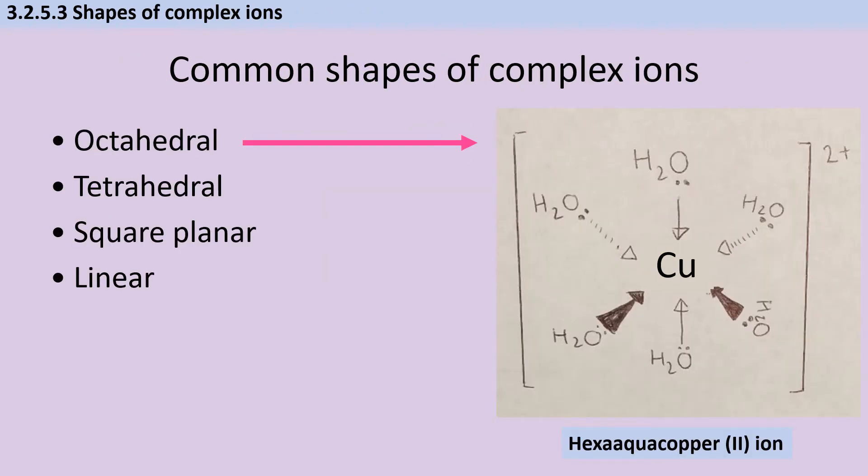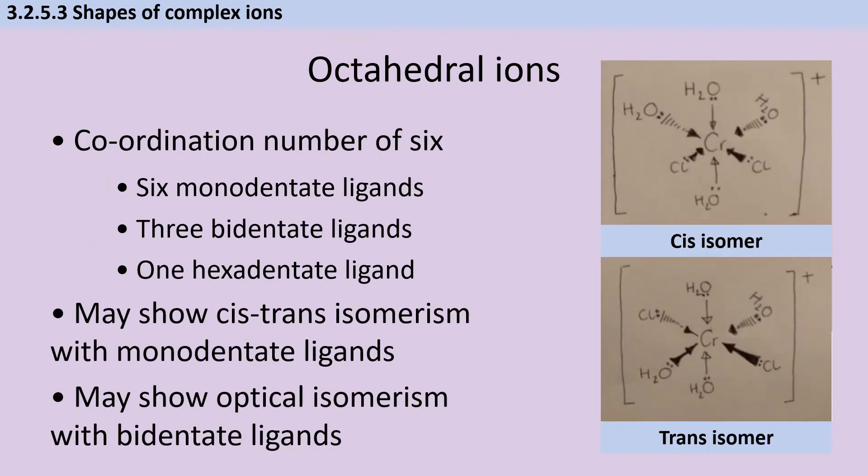The next part is shapes, and unlike the AS bonding topic, we only need to remember four shapes. Octahedral ions like hexa aqua ions have a coordination number of six. This could be caused by six monodentate ligands, three bidentate ligands, or one hexadentate ligand, or a combination. If there's more than one type of ligand, this can lead to isomerism.